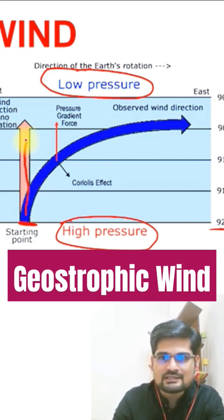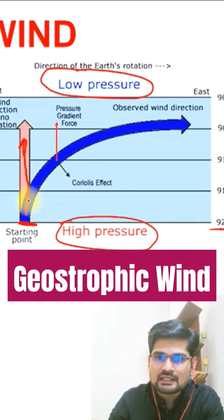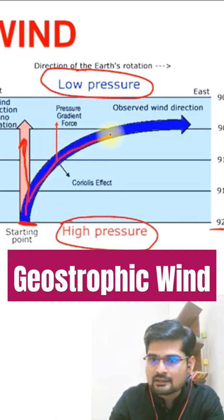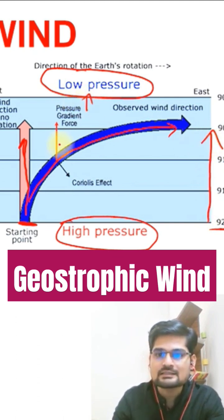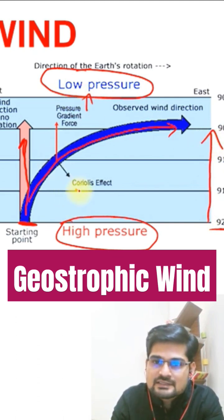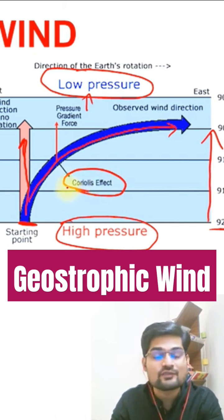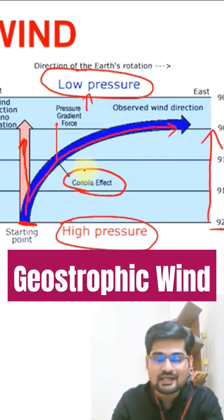This wind is not going straight, rather it is turning here as we are going from high to the low pressure. So what is this turn? This turn is basically the turn with this Coriolis effect, the Coriolis force, the force because of the rotation of the earth.